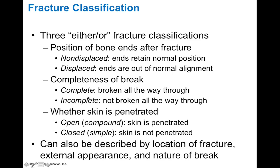In terms of completeness of the break, we can subdivide this into two major states: complete versus incomplete. A complete break is where the bone is broken all the way through, giving you two separate pieces. An incomplete break or fracture is where the bone is not broken all the way through — there may be a fracture that extends into the bone but doesn't separate any pieces.